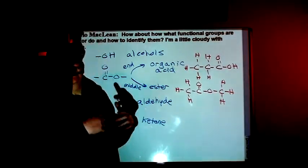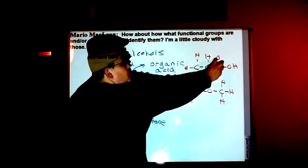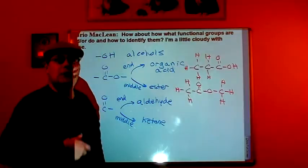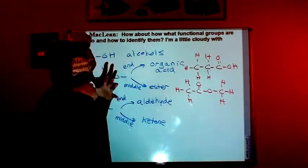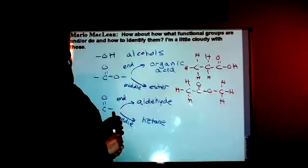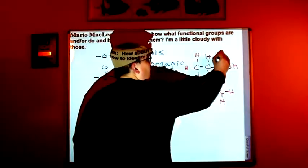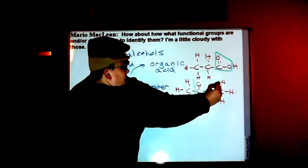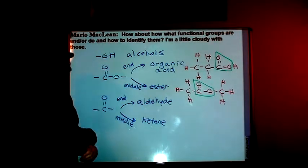Let's take a look at some examples. Here we have two molecules that are isomers of each other — they all have three carbons, two oxygens, and six hydrogens. Both molecules have the same number of carbons, hydrogens, and oxygens. What's the difference between them? In this molecule, the functional group is on the end carbon. In this one, the functional group is in the middle of the molecule. And that's the difference between organic acids and esters.